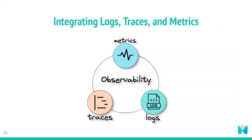Alone, each pillar of observability provides valuable information but not a complete picture. The metrics alerted the developer to the issue, the tracing helped them pinpoint where the issue was occurring, and the logs provided more detailed information about the root cause. By having insight into all three, developers get complete visibility of their system's health and performance.